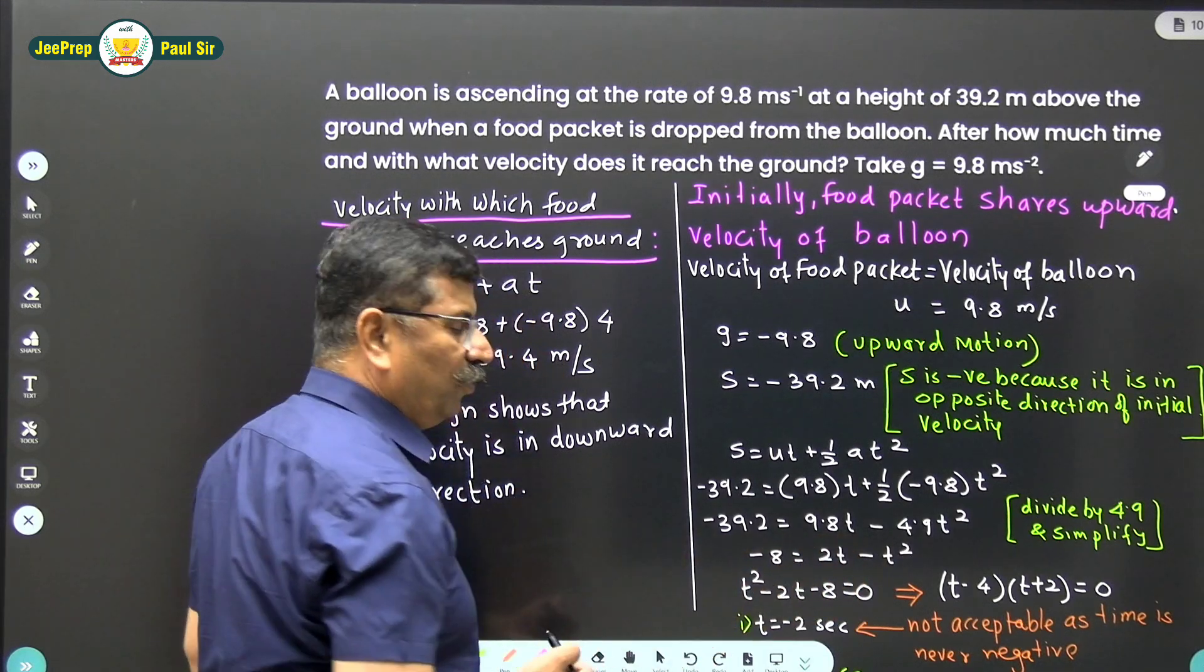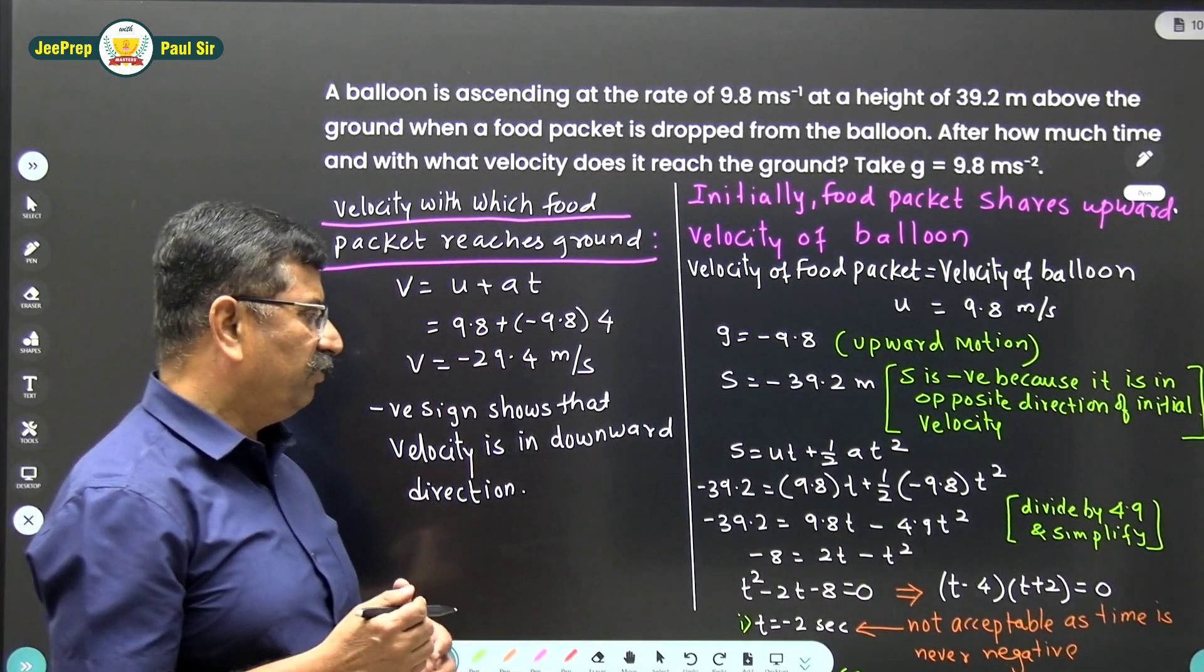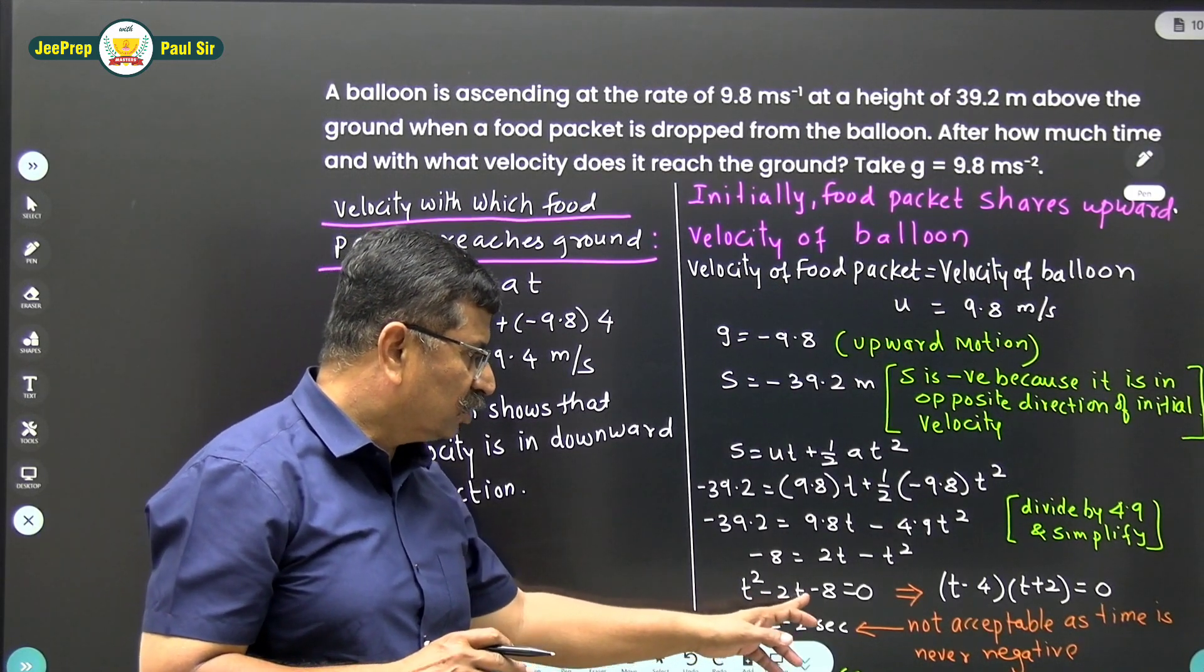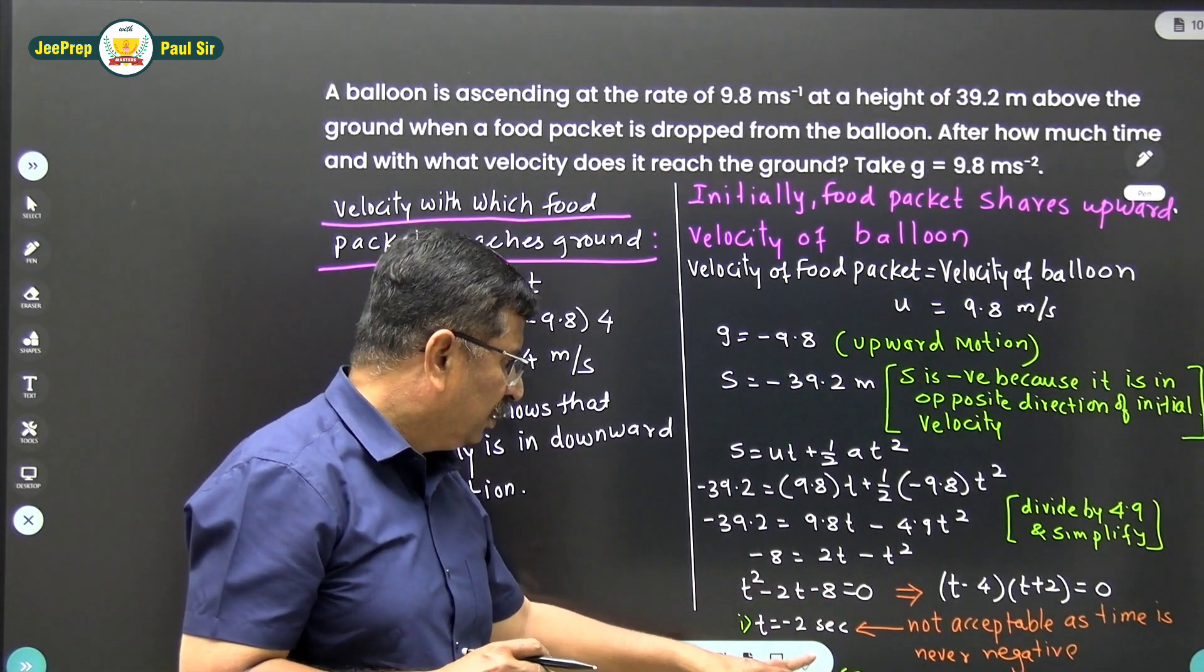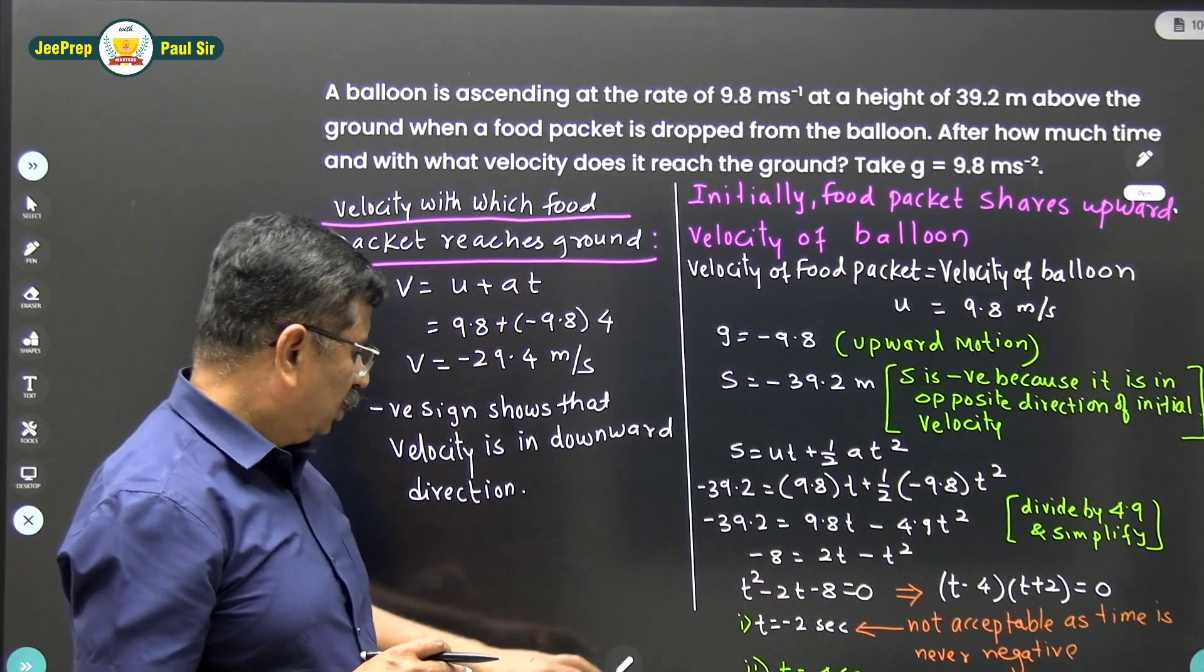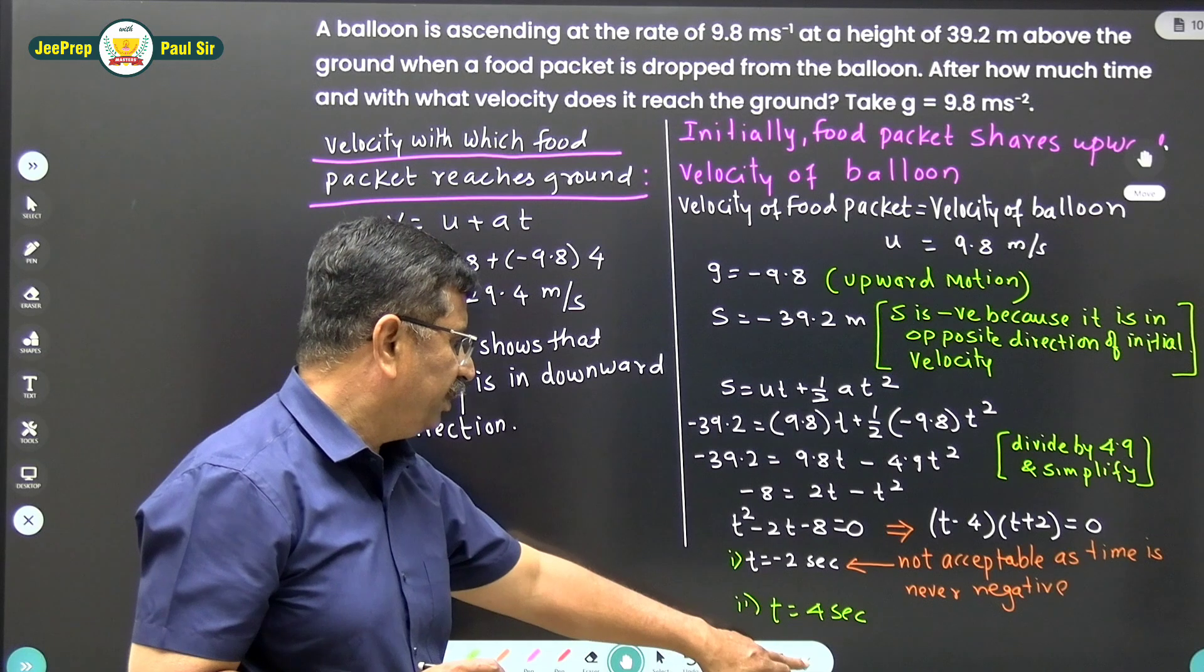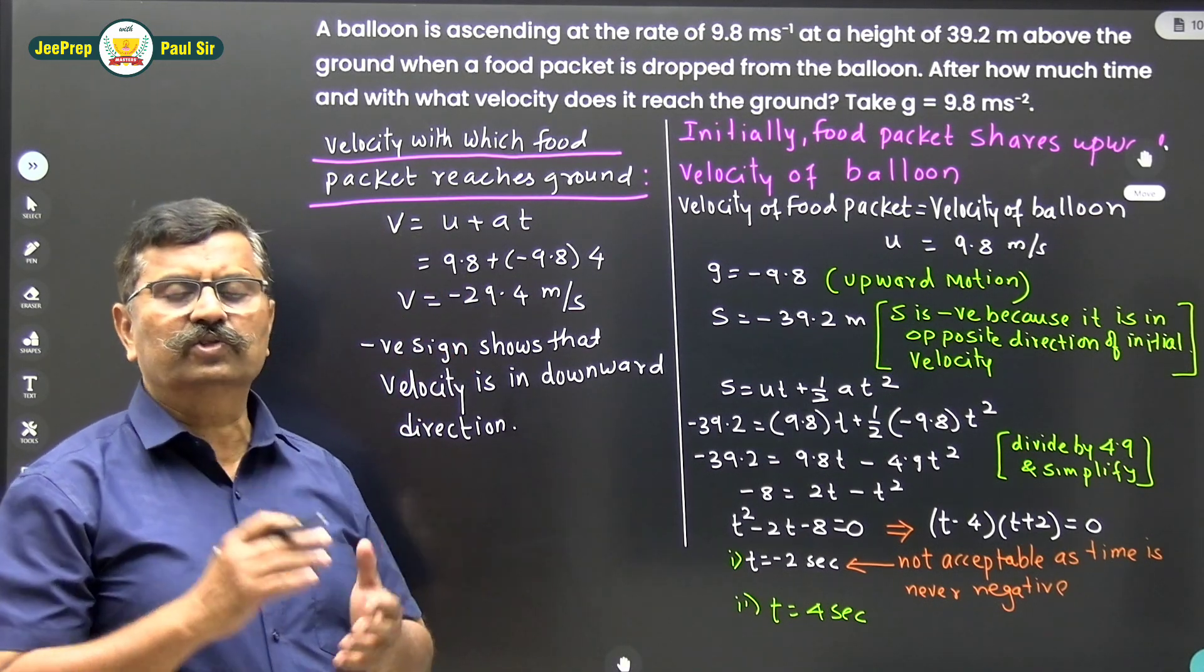Now divide throughout by 4.9 and simplify. You will get the quadratic equation t squared minus 2t minus 8 equals 0. If we solve this quadratic equation, we will get two values of t.